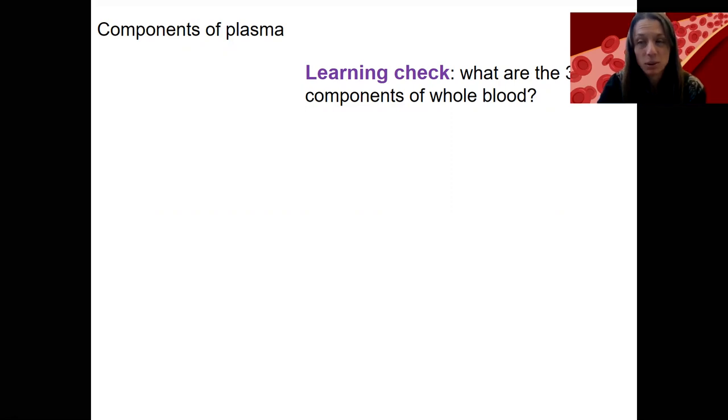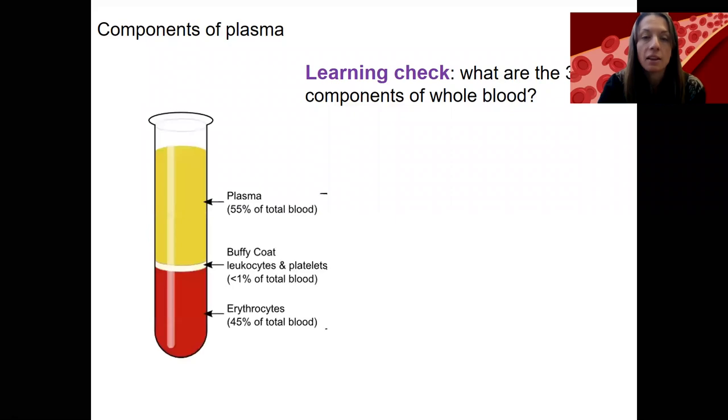Hopefully you get this. So if you spin it down, that's a way to separate these. And these are those three components: plasma, buffy coat, and erythrocytes.